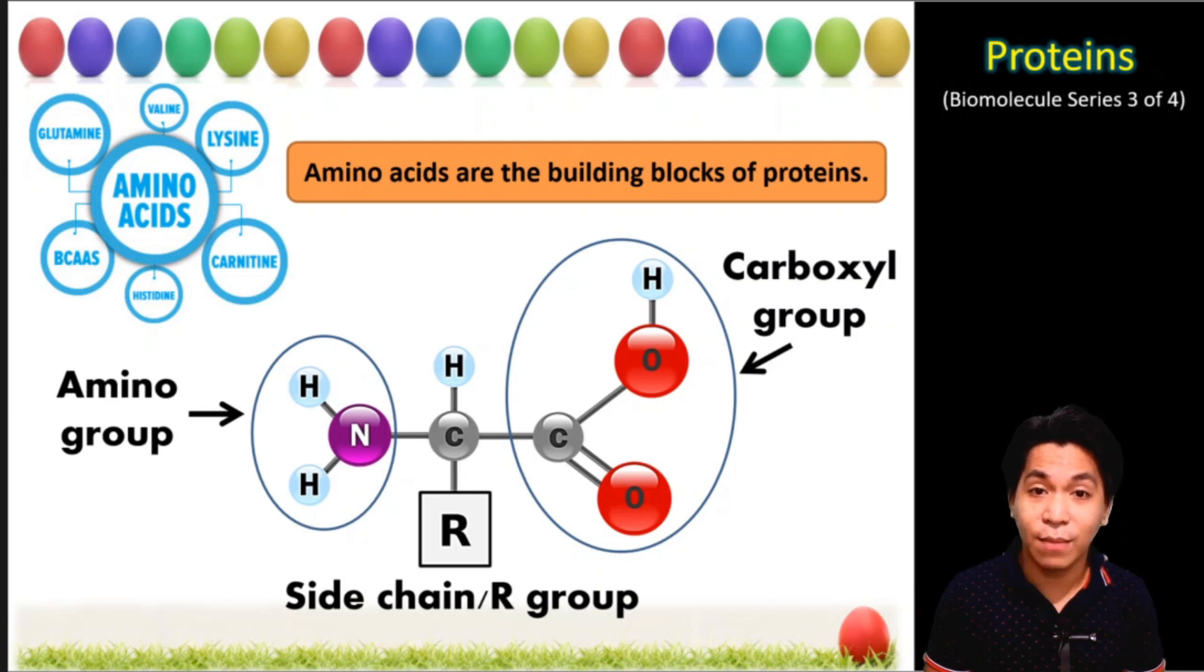Then you have the carboxyl group which contains the C double bond O OH. And you have what we call the side chain or the R group. The identity of an amino acid is determined by its side chain.